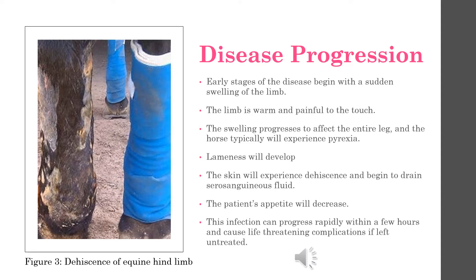Early stages of this disease present with a sudden swelling of a limb. The horse will eventually develop lameness that may become so severe that the horse refuses to bear weight on the limb. The infection can progress to this point within a few short hours, with some horses developing life-threatening complications such as laminitis or necrosis of skin tissue that causes it to slough.